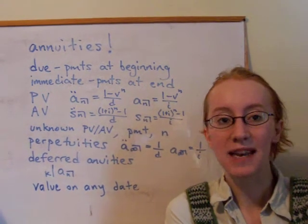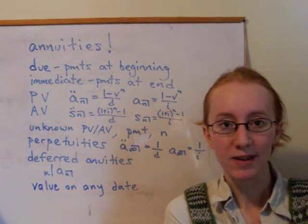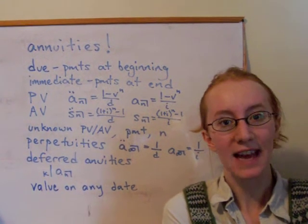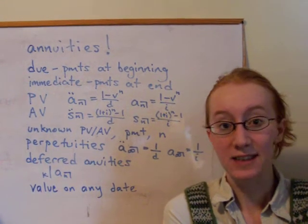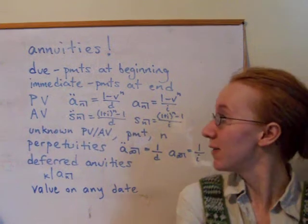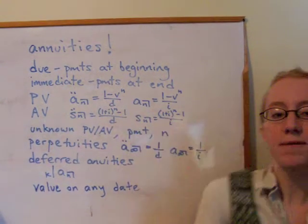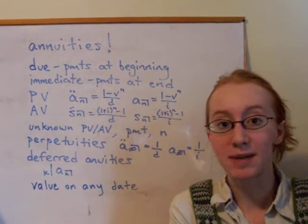So with each of these cases, we can actually figure out the present value, or even the accumulated value at the end of that time period, of that series of regular payments. And all four of these formulas here come from the formula for the sum of a geometric series.